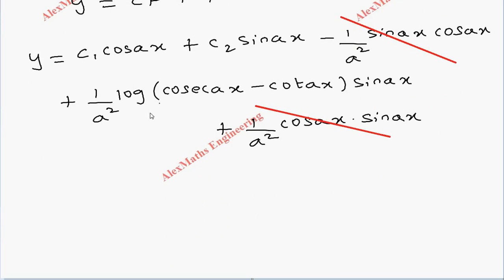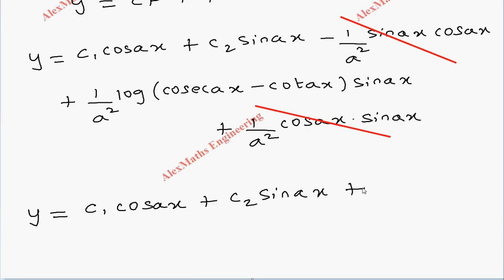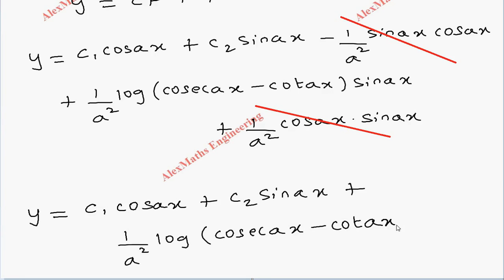After cancelling, the final complete solution is y equals c1 cos(ax) plus c2 sin(ax), plus 1/a² times log|cosec(ax) minus cot(ax)| times sin(ax). The log term is in a separate bracket multiplied by sin(ax).